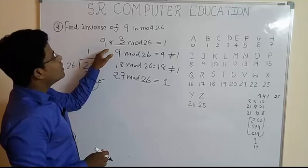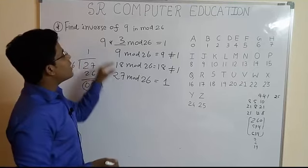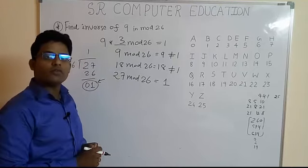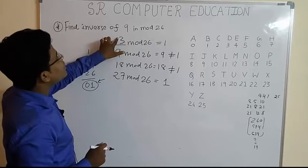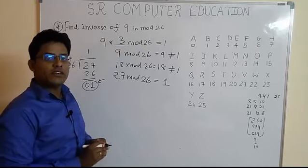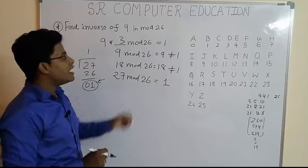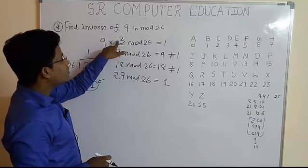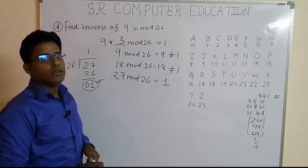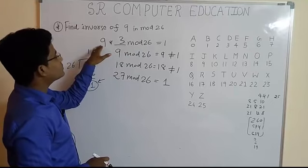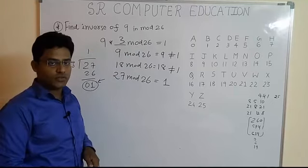Here you can find inverse of any number following this operation. You have to just remember one thing. You have to start with 1 and go up to 25. Wherever you get 1 as the answer, that number is the inverse of that given number in the equation.